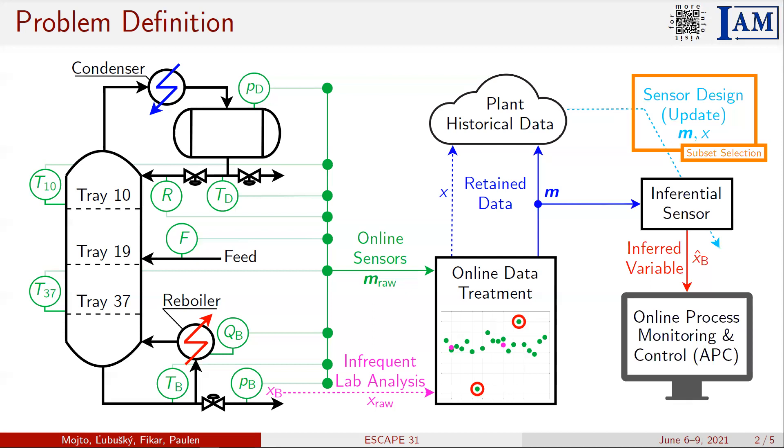This contribution is focused on the top right corner of this scheme. We design inferential sensors by subset selection using various overfitting criteria as the main objective and we compare the effectiveness of these designed sensors.